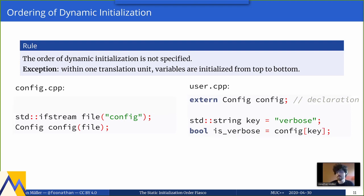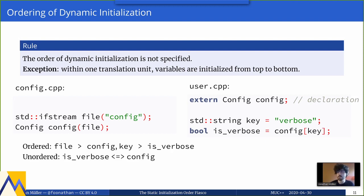That snippet only works if the string is initialized before the size_t. So when we have dynamic initialization that accesses other globals, whether it works depends on initialization order. The standard says the order of dynamic initialization is not specified, with the big exception that within one translation unit, variables are initialized from top to bottom. A translation unit is basically a source file after all headers have been pasted in. So variables like file, config, key, and isverbose are initialized top-to-bottom within each TU, but globals across different translation units have no guaranteed order.